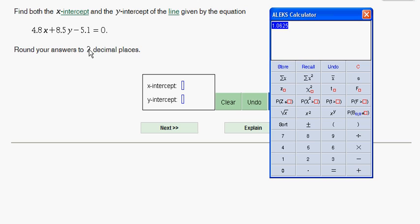But they want the answer rounded to two decimal places, so we're going to look at that 1.0625. Notice that the 6 is in the second decimal place. The number that's next to that in the third place is a 2, which is not enough to round that up. So our x-intercept is going to be 1.06.